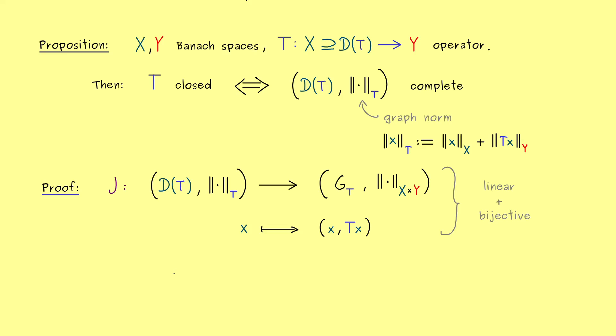However since we work in normed spaces here the question would be what about the norm. So how large is the norm in the image compared to the norm in the domain? So there we just need to know that the norm in the cartesian product is just the two norms added.